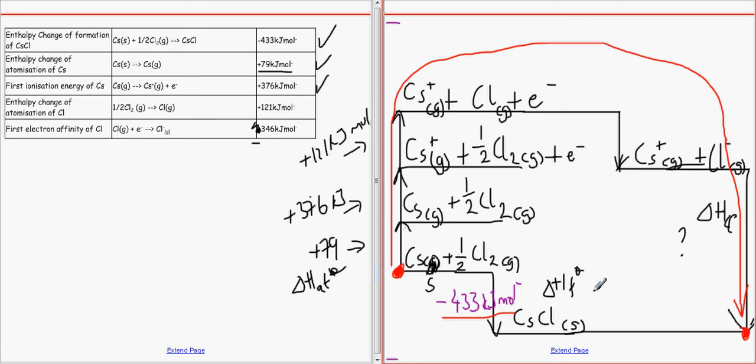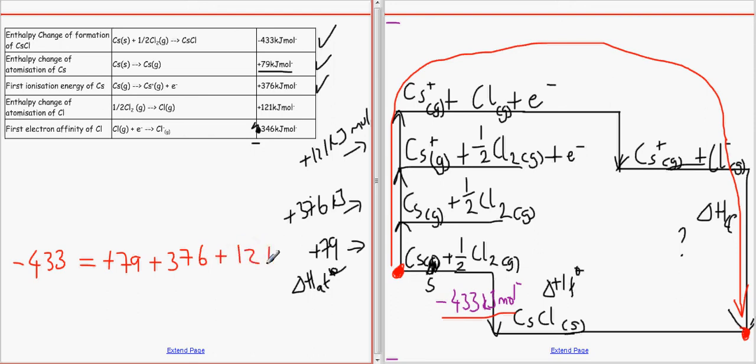So I'm going to quickly do that for you. We're going to do minus 433 equals to plus 79 plus 376 plus 121 minus 346 plus question mark because we don't know what this is.